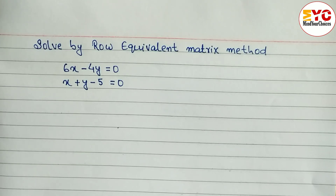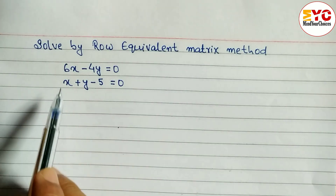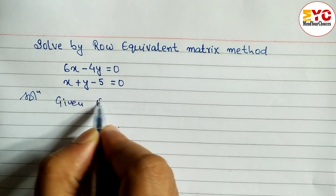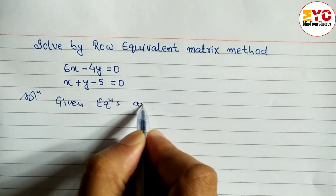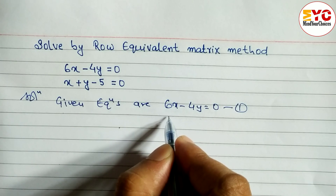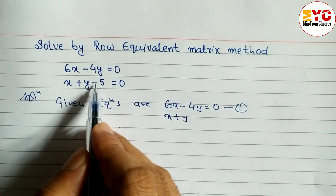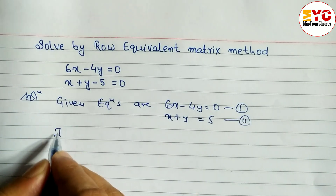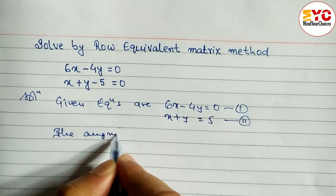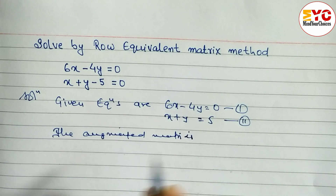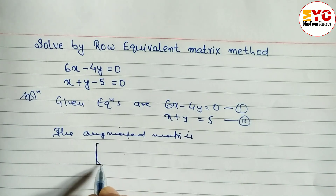Hello everyone. In this video we will learn how to solve by the row equivalent matrix method. We have a question — two equations are given: equation one is 6x minus 4y equals zero, and the next equation, moving the constant to the other side, gives us equation two with value five.